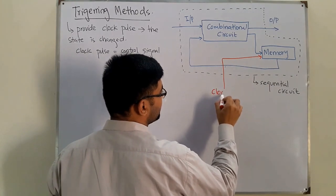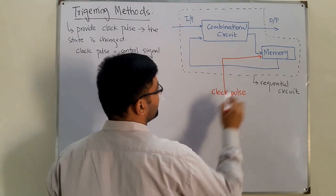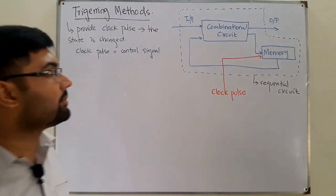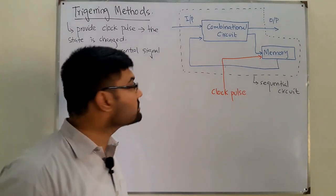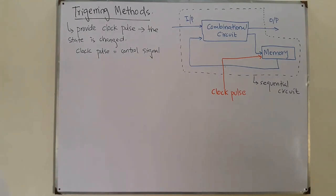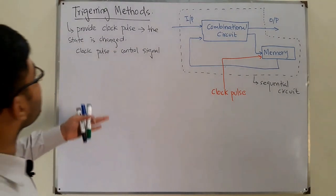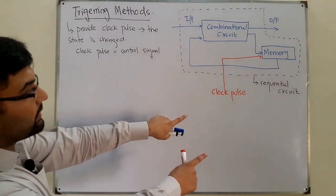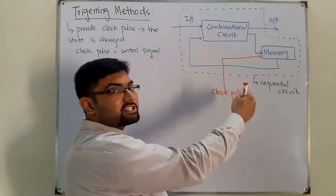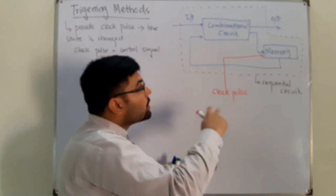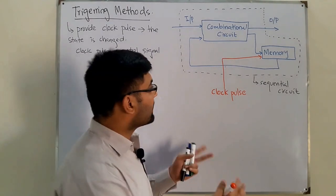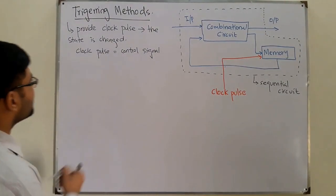The clock pulse is provided to the memory, and this memory would either be a latch or a flip-flop, which we will be seeing in the next videos very soon. This clock pulse is provided at the memory unit. When you provide this clock pulse along with the input and the previous state to determine the next state — when the previous state changes into a next state — this is called triggering.